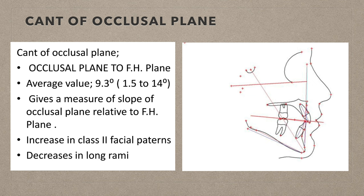Cant of occlusal plane. This is important, I think. The cant of occlusal plane is the occlusal plane to FH plane angle — the average value is about 9 degrees. It gives a measure of the slope of the occlusal plane relative to the FH plane. This angle increases in Class 2 facial patterns.